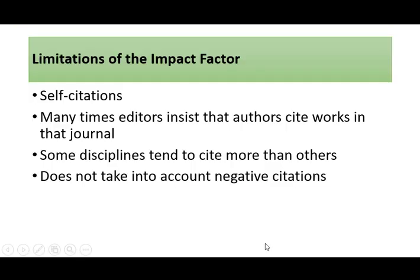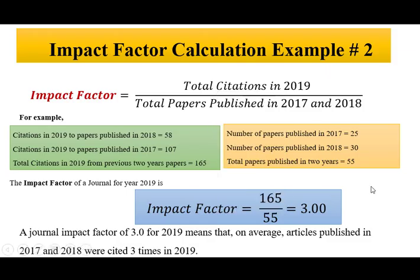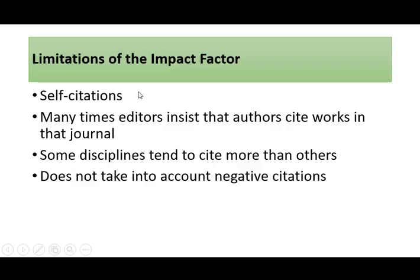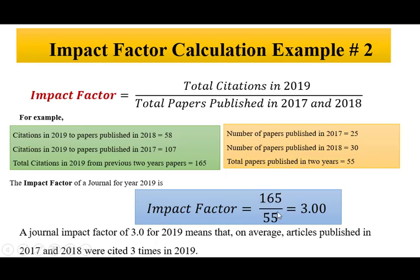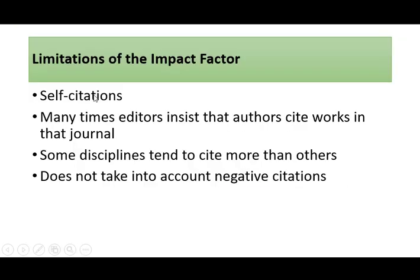The impact factor can be calculated each year and may differ from year to year. However, there are certain limitations of impact factor. Since it is simply a mathematical ratio, the more citations a journal has, the higher the impact factor. Therefore, self-citations may influence the calculation, and many editors insist that authors cite works from the same journal to inflate the impact factor. Additionally, some disciplines tend to cite more than others, which is another limitation and drawback.